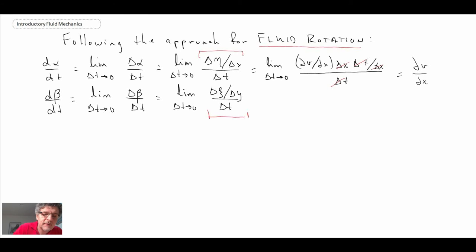And what we end up with is the partial u by partial y is the time rate of change of beta with respect to time.